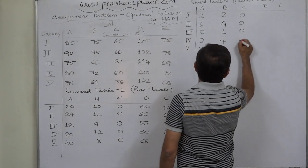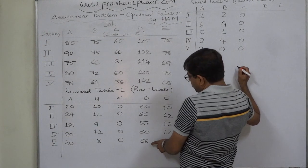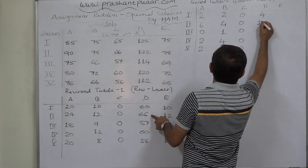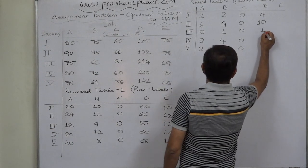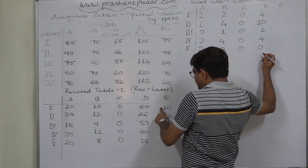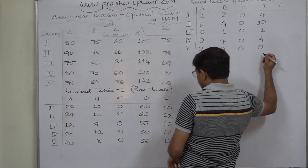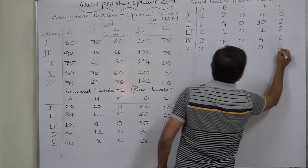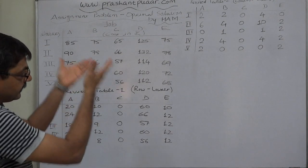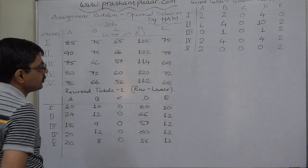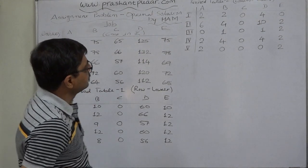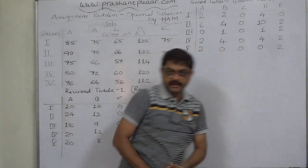All zeros remain in column C. In column D, the lowest value is 56. Subtracting: 60 minus 56 is 4, 66 minus 56 is 10, 57 minus 56 is 1, 60 minus 56 is 4, and 56 minus 56 is 0. The lowest value in column E is 10, giving values: 0, 2, 2, 2, and 2. Now checking: we have at least one zero in all columns and rows — row 1 has 2 zeros, row 2 has 1, row 3 has 2, row 4 has 1, row 5 has 3; columns each have at least one zero. We can now proceed to assignment.